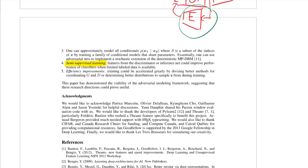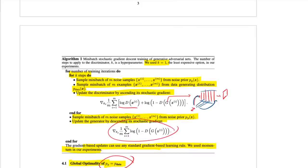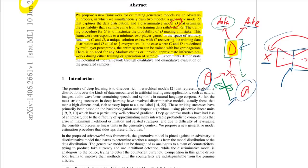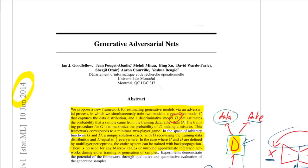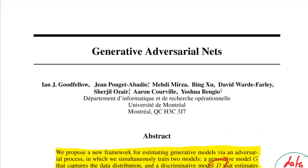That was my take on Generative Adversarial Nets. Please tell me if you like historic paper overviews — it's more of a rant than a paper explanation, but I do enjoy going through these papers and looking at them in hindsight. I wish you a nice day. Bye-bye.